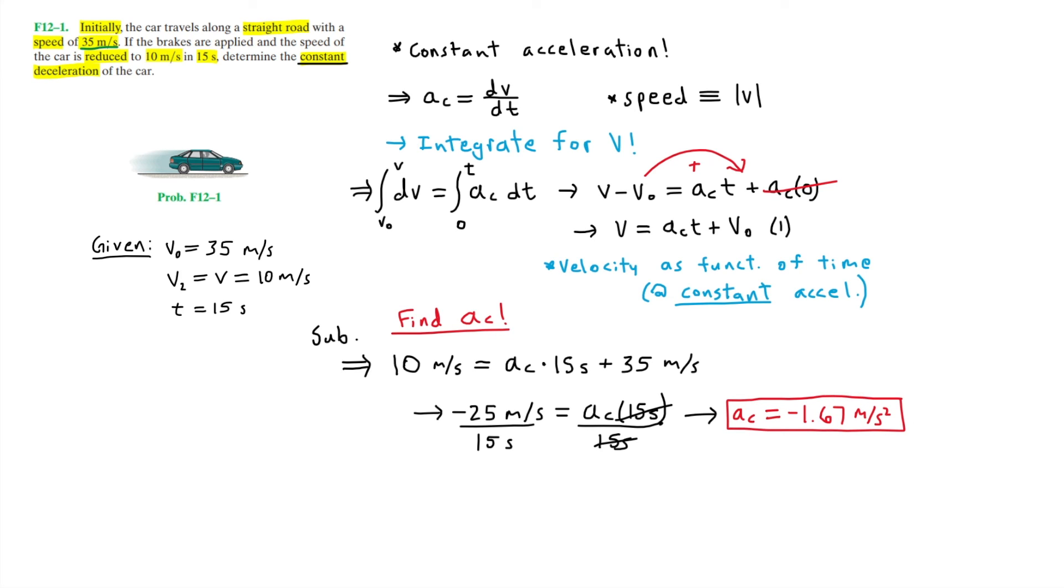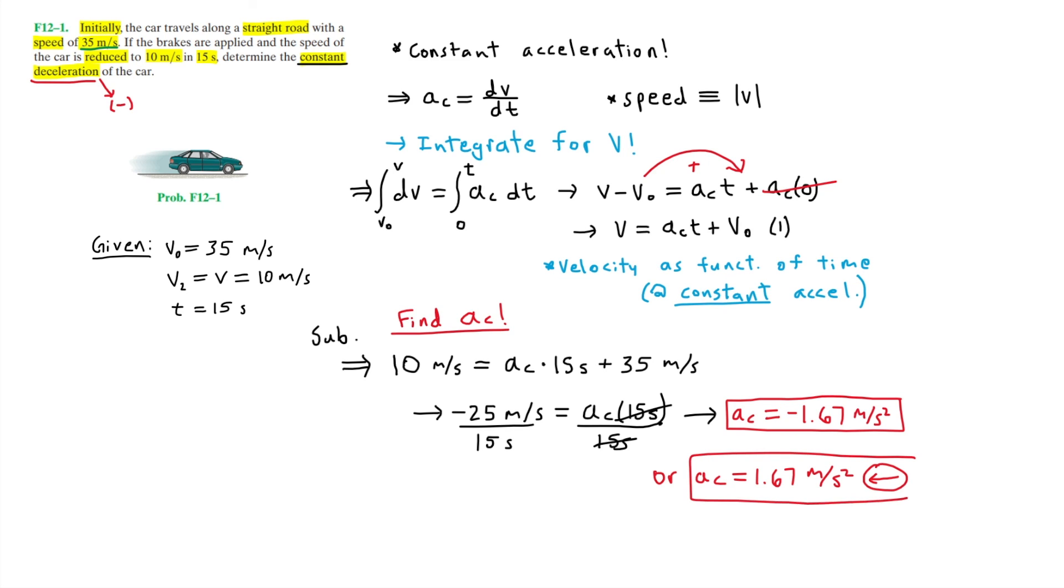Which makes sense here since the car is decelerating and deceleration is essentially negative, assuming that negative acceleration is to the left and positive is to the right. Although, another way you can write this is A sub C equals 1.67 meters per second squared and indicating the direction of the acceleration with an arrow to the left. And so we have found the constant deceleration of the car.